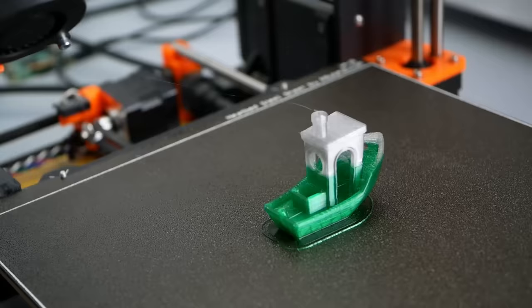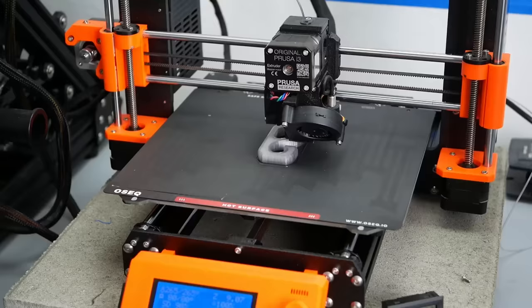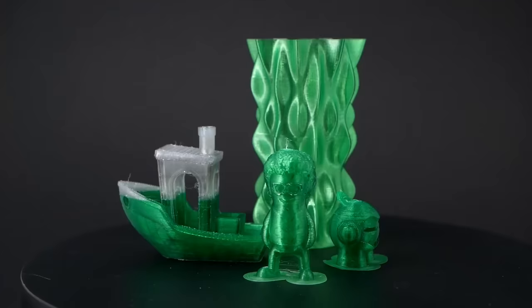I printed the material on Prusa's textured PEI sheet and the OSEC PEI sheet and had no issues with warping or adhesion. The parts, of course, have the same color as the bottles, came out shiny and nicely translucent.